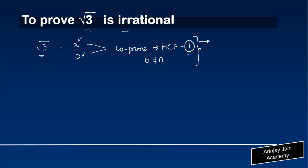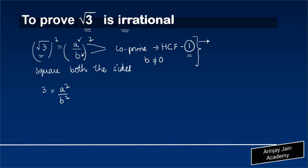Because if it was rational, the only highest common factor they would have had is 1. To prove that, we square both sides: square root of 3 equals a upon b, giving us 3 equals a square upon b square. Cross multiplying, we get 3b square is equal to a square. Looking at this, it implies that a square is actually divisible by 3, because a square can be written as 3 times b square.